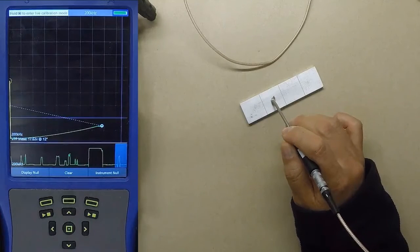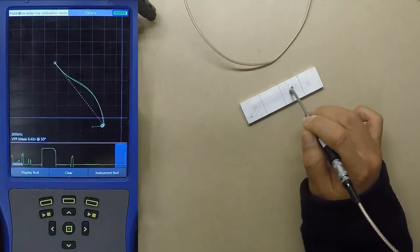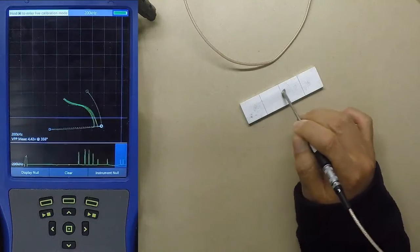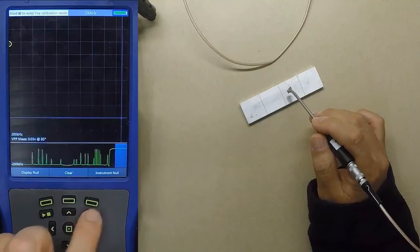This gets much worse if you have a surface which is not smooth or has different geometries. At worst, POD can be affected if the operating point moves off the screen and the inspector is unable to identify flaw signals.